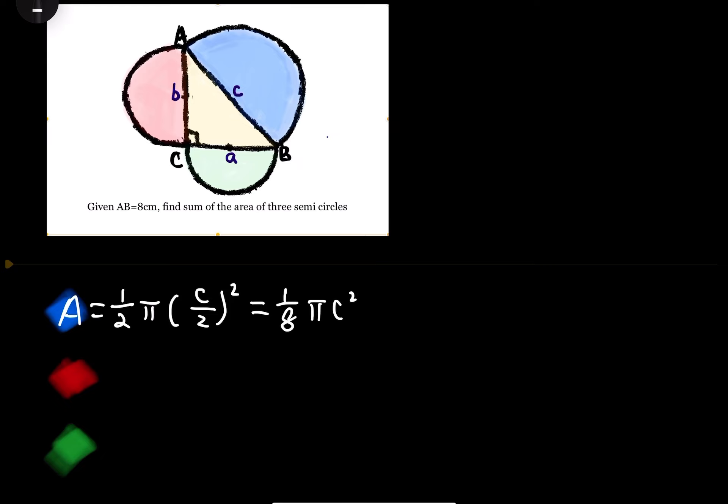Similarly, the red circle will be half pi (b/2) squared, which gives 1/8 π b squared. And the green one will be half pi (a/2) squared, which gives 1/8 π a squared.